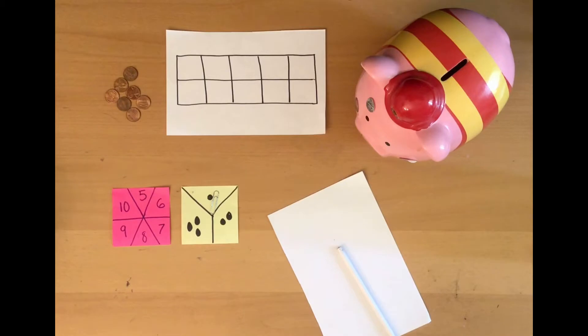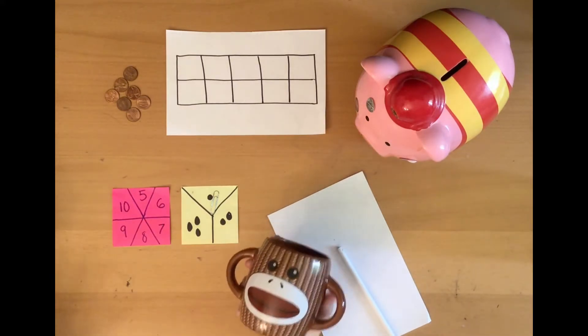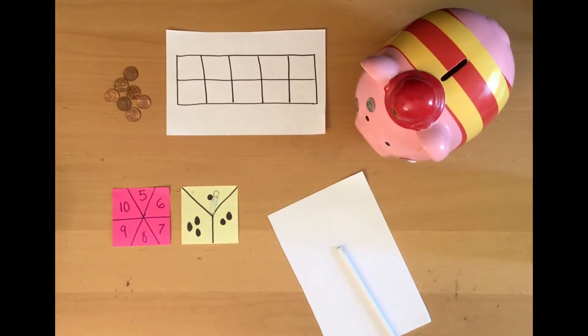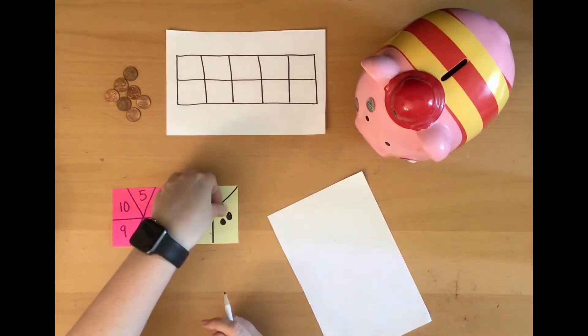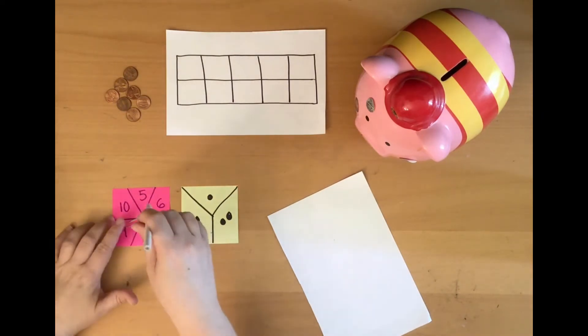So we are going to play piggy bank subtraction. If you don't have a piggy bank, that's okay. You can still play this game. You can use any kind of cup or bowl or just your hand. But since I have a piggy bank today, I'm going to go ahead and use that. All right, so you can see I have two spinners, one with the numbers 5 through 10 and one with just some dots. So I'm going to start with the spinner with numbers. That's going to tell me how many pennies I need.